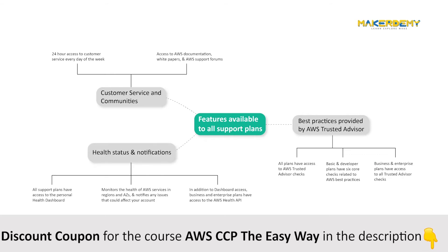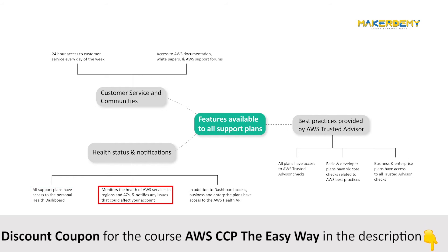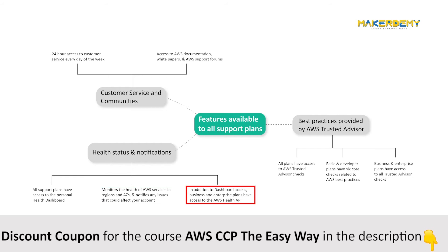Next, health status and notifications. All support plans have access to the Personal Health Dashboard, which monitors the health of AWS services in regions and availability zones, and notifies you of any issues that could affect your account. In addition to dashboard access, business and enterprise plans have access to the AWS Health API.